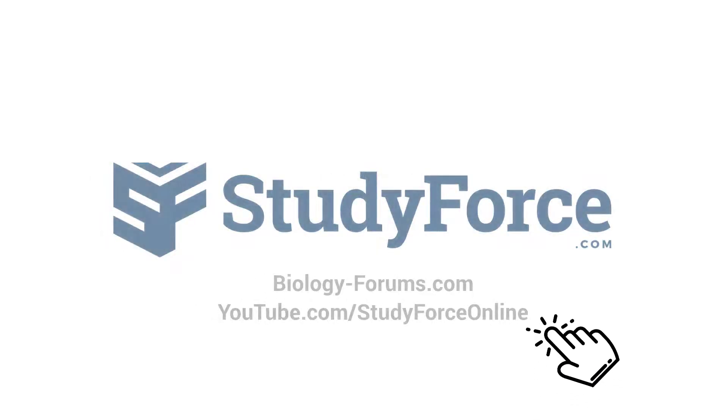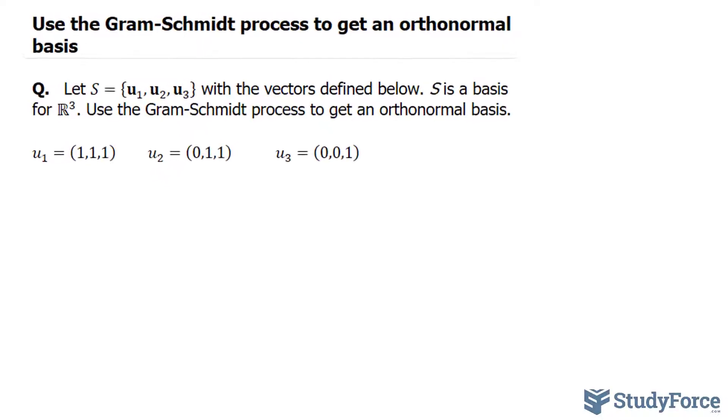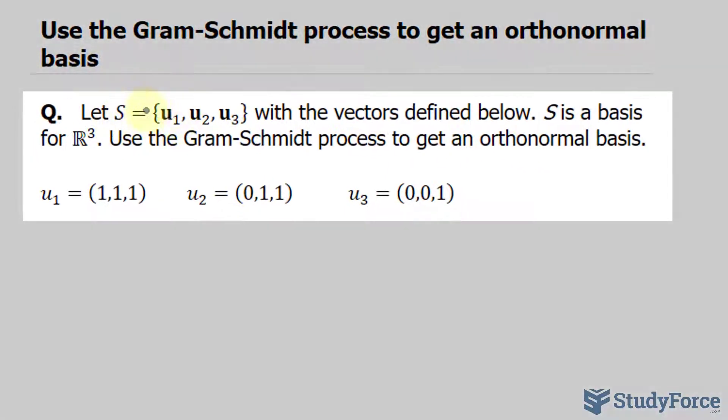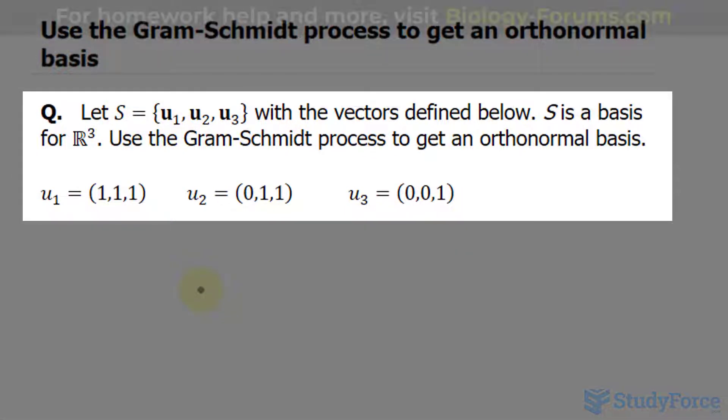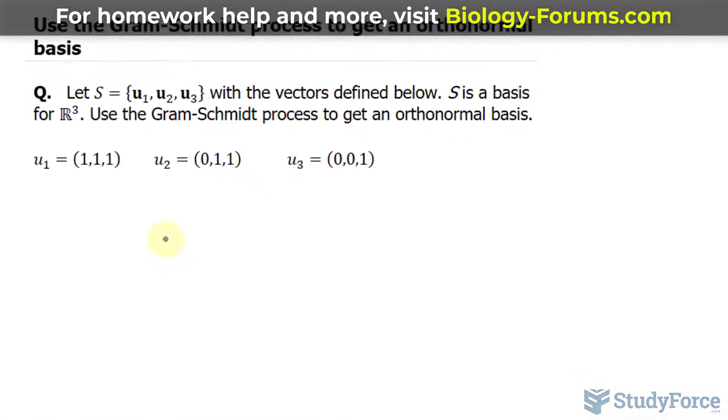In this lesson, I'll show you how to use the Gram-Schmidt process to get an orthonormal basis. The question reads: let the set S equal to these three vectors with the vectors defined below. The set S is a basis for R3. Use the Gram-Schmidt process to get an orthonormal basis.